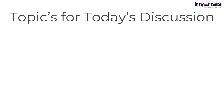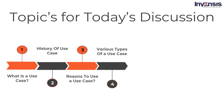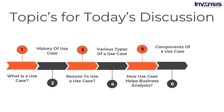We will begin by discussing what a use case diagram is. Then we shall look into the history of use cases. Moving on, we will touch on why use cases are important. Next, we will discuss the different types of use cases. Later, we will talk about how a use case helps a business analyst. Then, we shall see the various components of use cases and wrap up the session by looking at real-time examples of use case diagrams. I hope the agenda is clear. Let's get started.